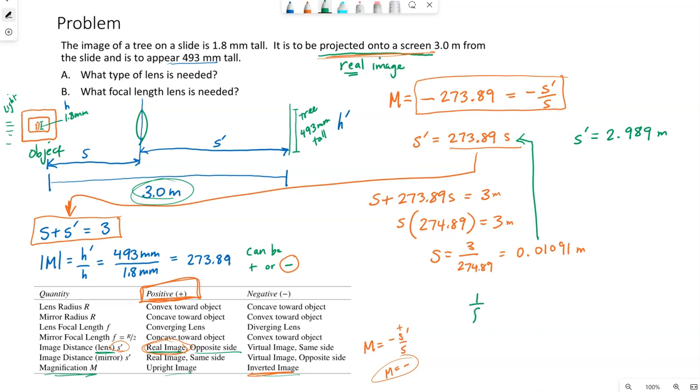So now we can find the focal length using the equation that relates S, S prime, and F together. So 1 over S plus, 1 over 2.989. I'm getting 0.01087. And that would be in meters. So two significant figures. These two guys right here will be significant. So 1.1 centimeters is the focal length of this lens.